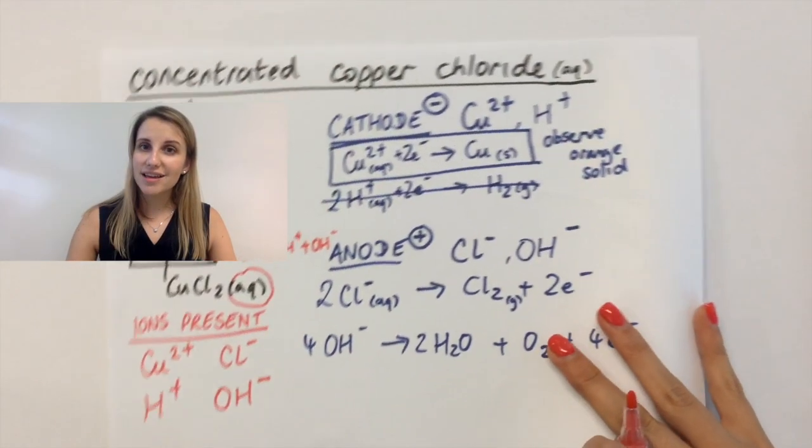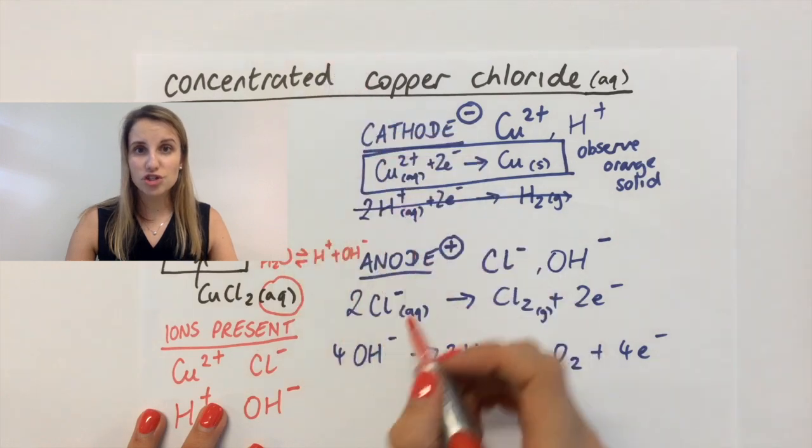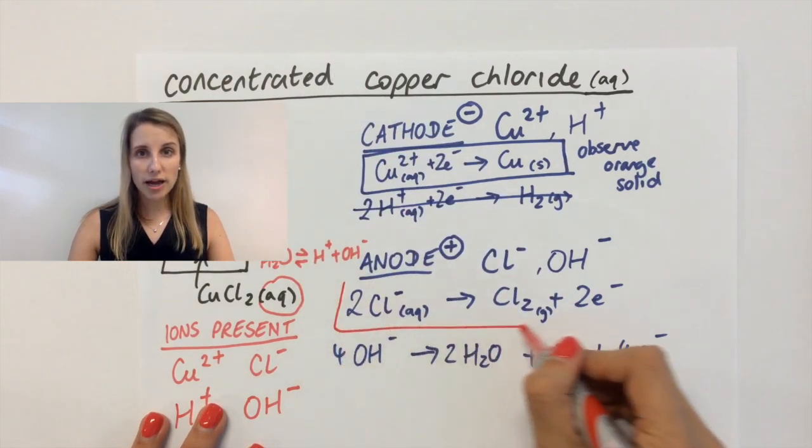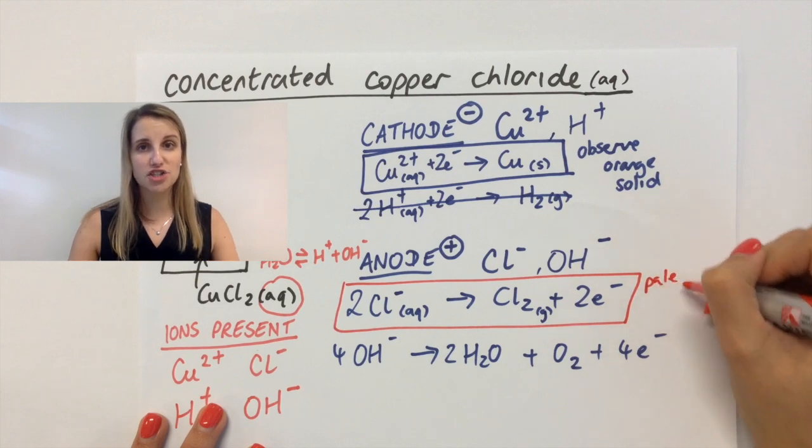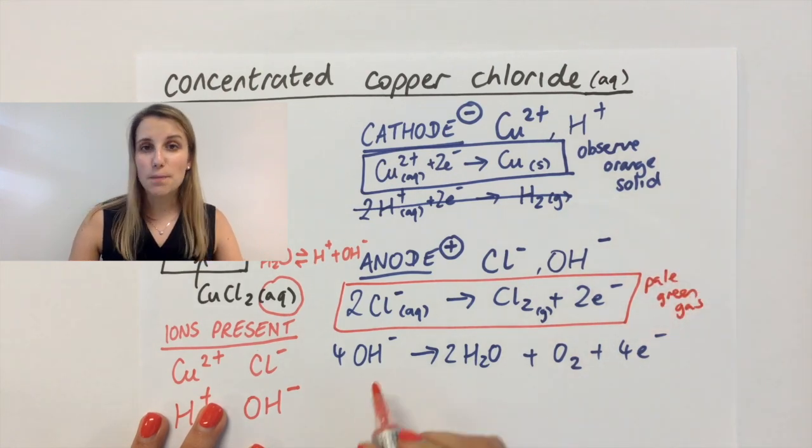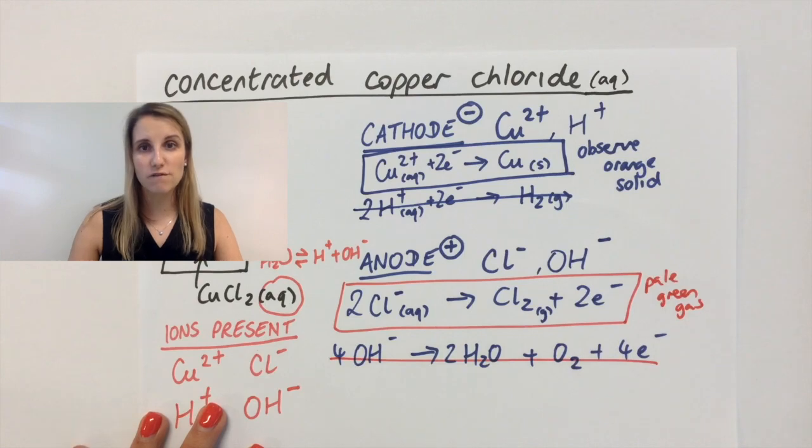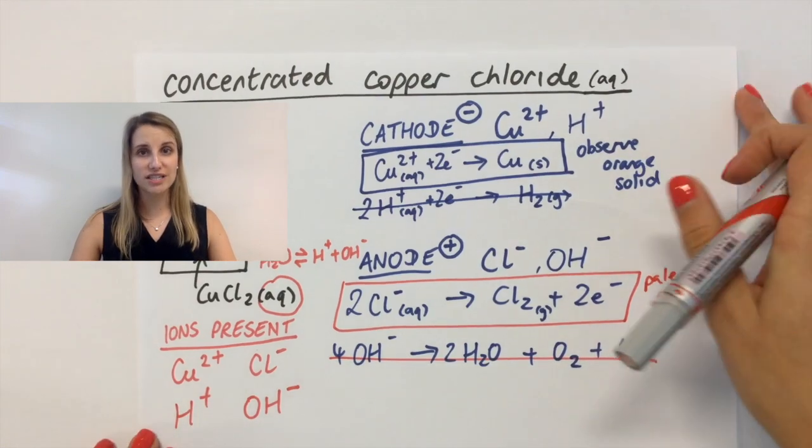So looking back at the example, you can see that because it's concentrated, that means that the Cl- will get oxidized to form Cl2. It will discharge the Cl2. That means that what you'll see is a pale green gas being evolved from the anode or the positive electrode.